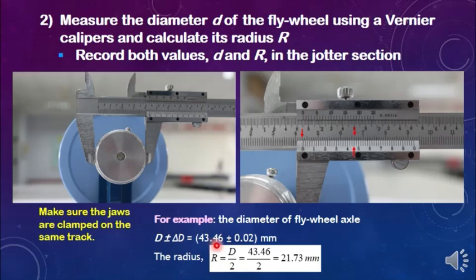The radius of the axle can be obtained using this formula, half of the diameter. Therefore, the radius of the axle is 21.73 mm.